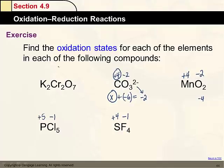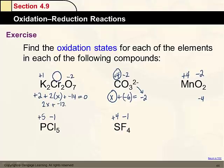For K₂Cr₂O₇: potassium is a group 1A metal so it's +1, giving +2 for two potassiums. Oxygen is -2 × 7 = -14. Setting up the equation: 2(+1) + 2x + 7(-2) = 0 simplifies to 2x - 12 = 0, so 2x = 12 and x = +6. Chromium is +6 so the whole compound is neutral overall.